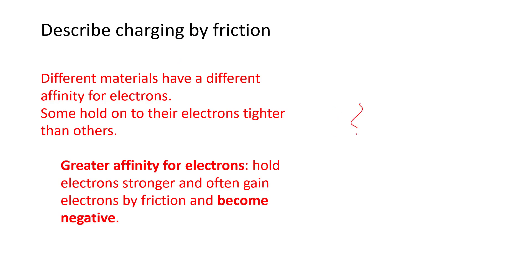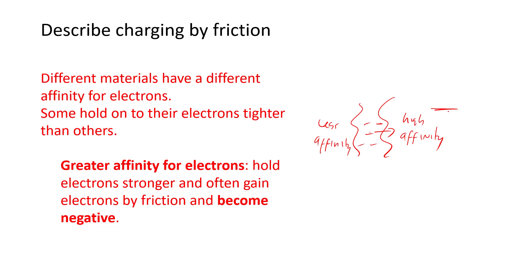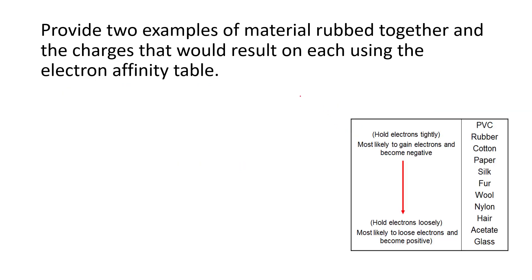Describe charging by friction: you have two objects rubbing against each other, and electrons get knocked off from both objects. One of them is going to hold onto electrons more than the other — one has higher affinity, the other lower. The charges stick to the one with highest affinity, which becomes negative, while the lowest affinity becomes positive. Using the triboelectric series table — for example, PVC and silk rubbed together — PVC becomes negative, silk becomes positive. For paper and hair, paper becomes negative and hair becomes positive.